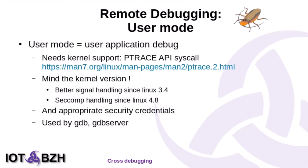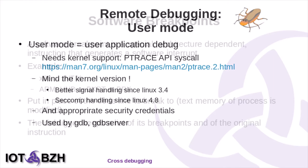User mode debugging means application debugging. The debugger relies on the Ptrace API that is built into the kernel. Since last year, there have been several significant improvements in the Ptrace API. Signal handling is far better since Linux 3.4, and security has been improved with seccomp since Linux 4.8. For using the Ptrace API with GDB, you have to get the appropriate security credentials.